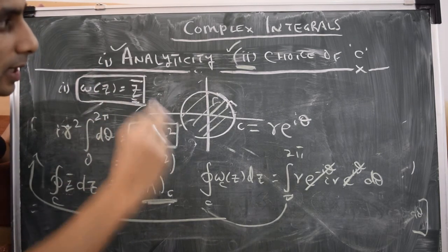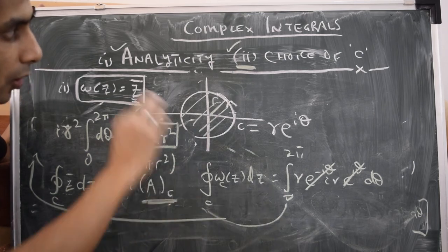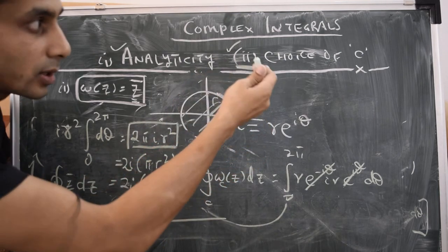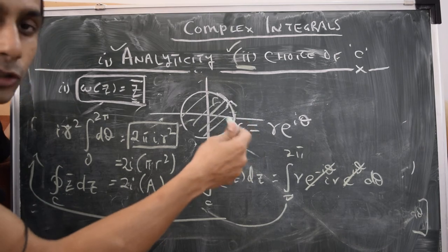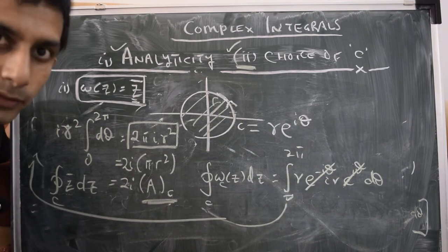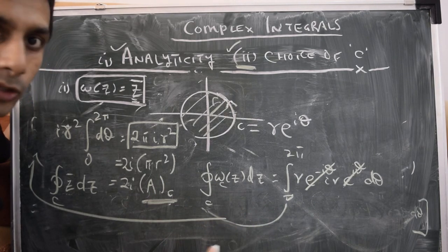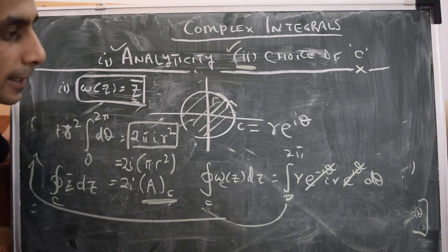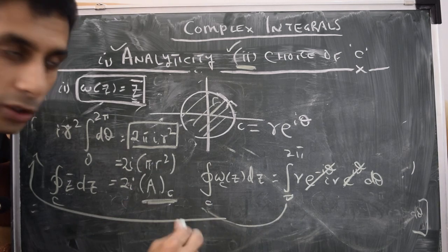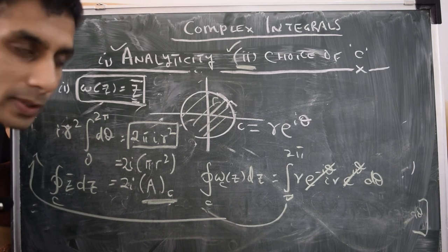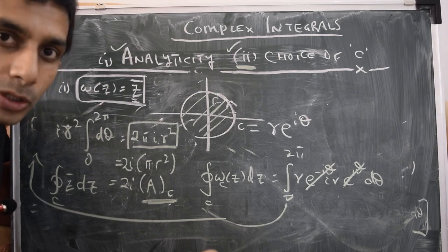So we've explored both aspects: analyticity and contour choice. For a non-analytic function, the integral generally depends on the choice of contour c. For an analytic function, the integral is independent of the contour choice — and over a closed contour in a simply connected region, it evaluates to zero. Hopefully these examples build intuition about contour integrals and Cauchy's integral theorem. In the next part, we'll work with more examples to reinforce these ideas and explore new ones. Thanks for watching.